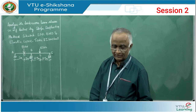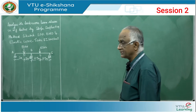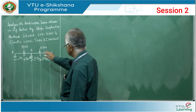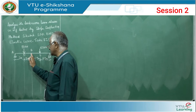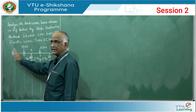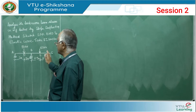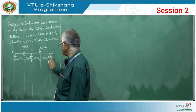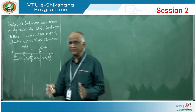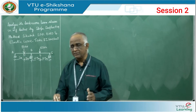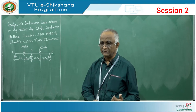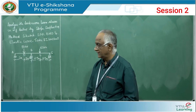We write two slope deflection equations for each span — end moments at A and B for span AB, and end moments at B and C for span BC — treating each span as a fixed beam. First, find the fixed-end moments, then apply the slope deflection equation.